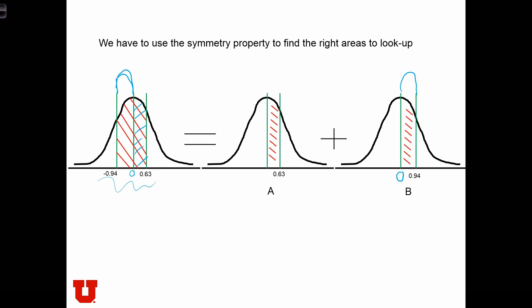So to calculate this entire area, we're going to split it up into two parts and calculate the inverse of the negative side. We'll find the area between zero and 0.63 and the area between zero and 0.94, and add those two up to get the total region of interest.